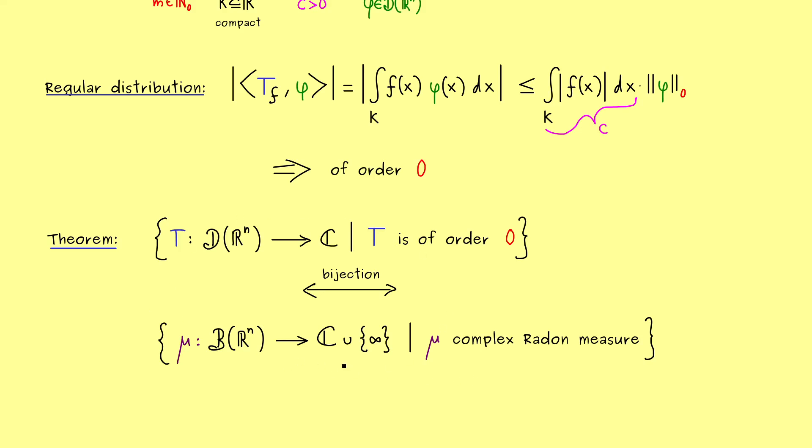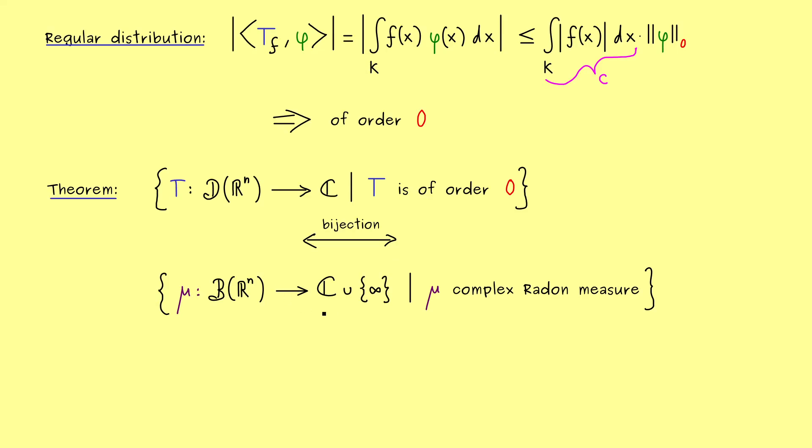Now, I don't give you the whole proof. But we can see how this bijection should look in the one direction. Indeed, for the complex measure μ, we can define the distribution T_μ. And now it will not surprise you, we will define that with an integral. Simply because, we can just integrate with respect to μ.